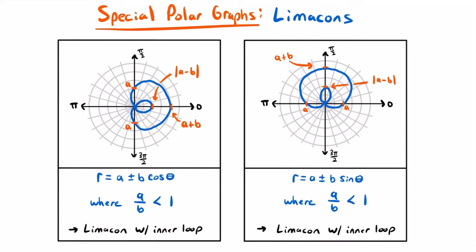The first type of special polar graphs are called Limaçons, and there are a couple different types. The first type are Limaçons with an inner loop. All Limaçons are represented by the same form of polar equation: r equals a plus or minus b times cosine theta, or r equals a plus or minus b times sine theta. When a divided by b is less than one, you get a Limaçon with an inner loop.